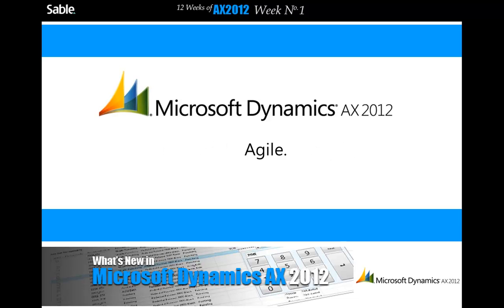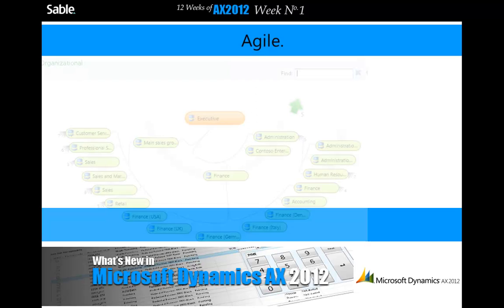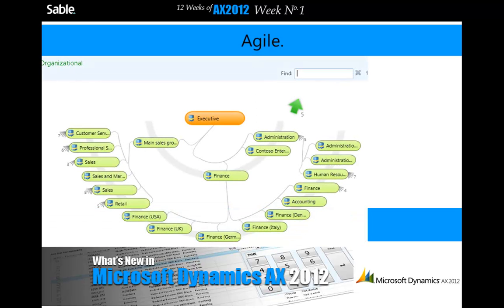Microsoft Dynamics AX 2012 is agile. By expanding business opportunities, modifying processes, and differentiating your business, AX 2012 provides unprecedented agility. Natural modelling to continuously plan, visualise, and change your processes. Flexible deployment options. Agile technology that makes it easy to change and differentiate your business.